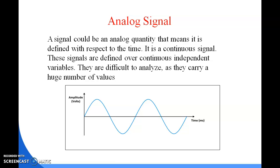An analog signal is a continuous quantity defined with respect to time. The signals are defined over continuous independent variables and they are difficult to analyze as they carry a huge number of values. As shown in the picture, it is a continuous sinusoidal curve.